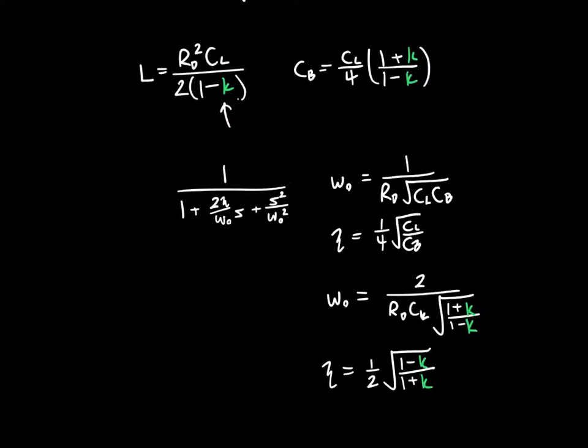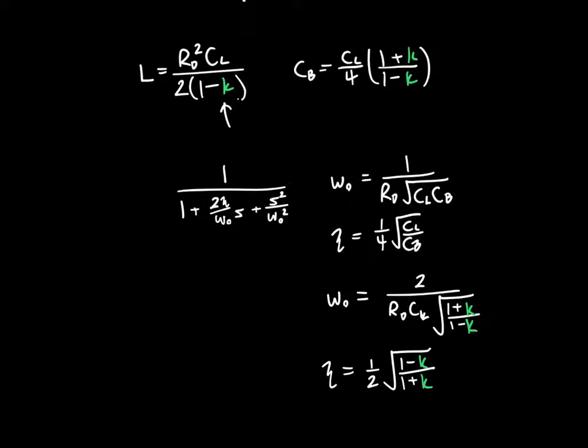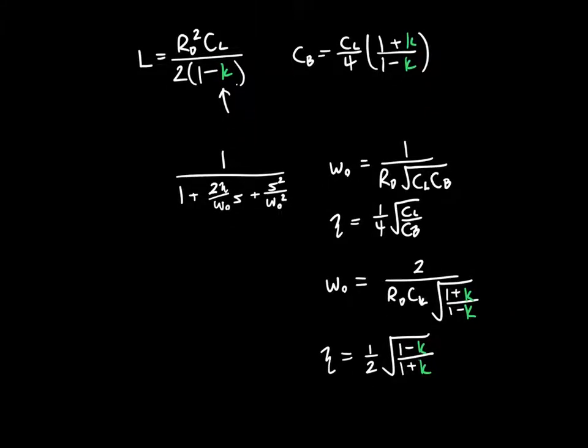This is interesting because it says that we only have one degree of control over our circuit. We only get to choose K. And once we choose K, we know what our value of L has to be, we know what Cb has to be, we know what omega naught is, and we know what zeta is. So we only get to make one decision. And that actually turns out to be a good thing because it makes our lives much easier. If we want to design the circuit for a specific zeta, say maximum flatness, which corresponds to zeta equals 1 over square root of 2, then we know what our K has to be.